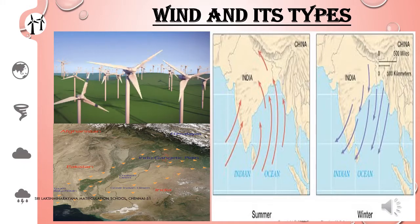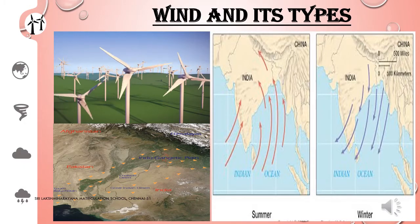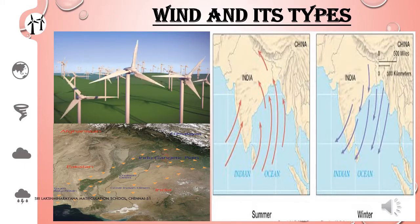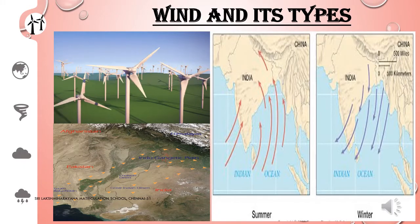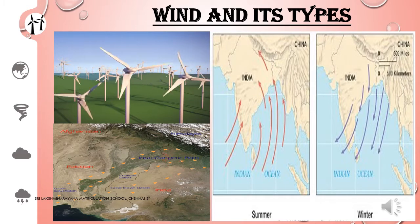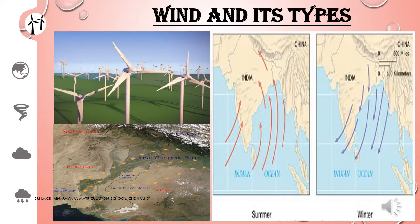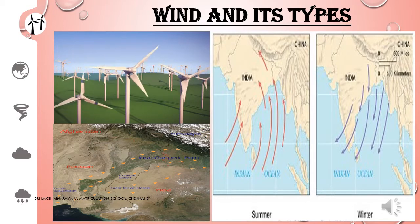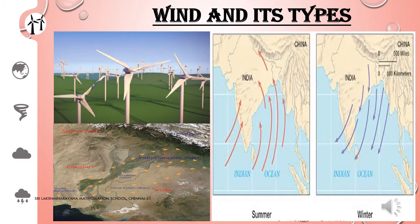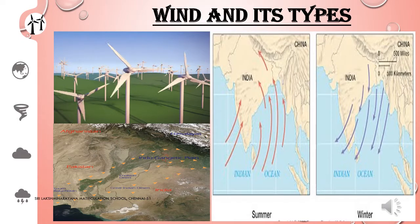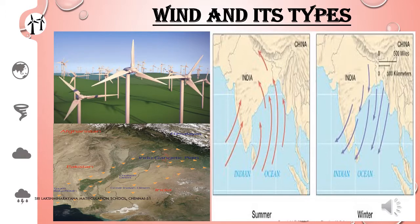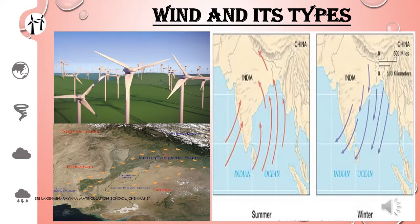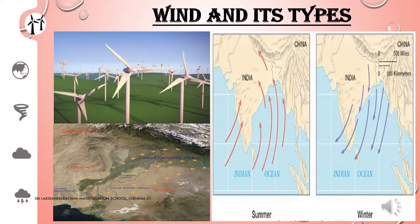There are different types of winds. First, Loo wind. Loo is a strong, dusty, hot and dry summer wind which blows over the northwestern India during the month of May and June. Second, Planetary wind. This wind blows in the same direction throughout the year.